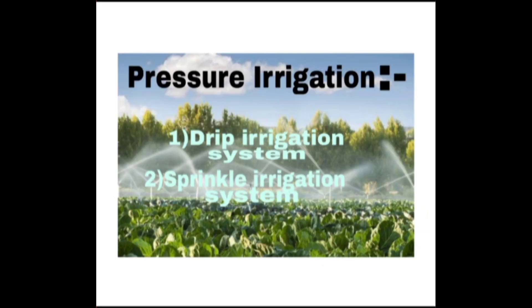Now we will discuss about pressure irrigation. So in this system, water is pressurized and precisely applied to the plant under pressure through a system of pipe. Is kriya mein vahwara dwarah paani ka hawa mein chirkau kia jata hai.